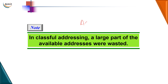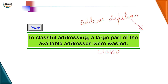In classful addressing, we are wasting a large portion of addresses by dividing them into fixed classes, creating a problem called address depletion. To avoid this, we use another technique called classless addressing, where the address space is not divided into fixed classes. Instead, a particular block of addresses is allocated as required. In the next video we will learn about classless addressing. Thank you.